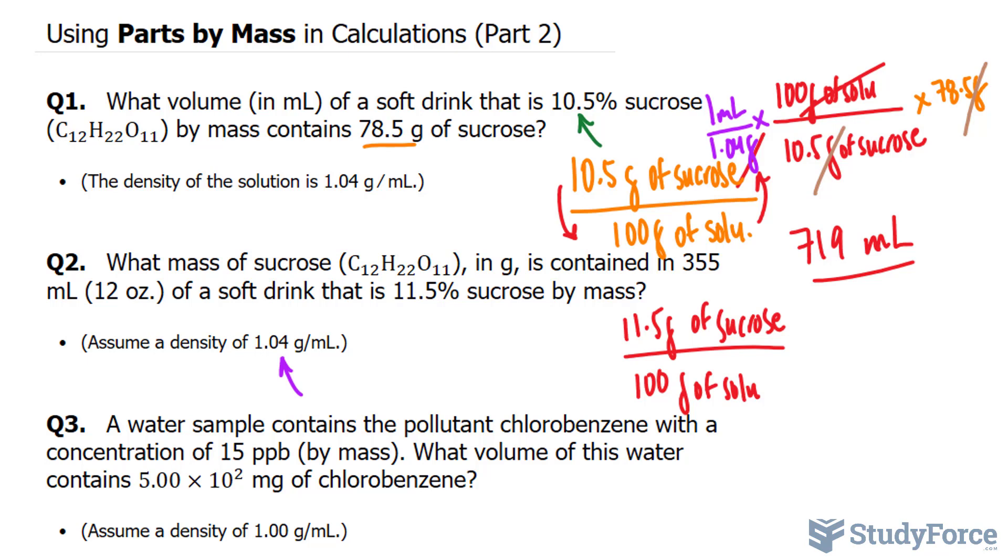Remember what we're looking for here. We're looking for the mass of sucrose at the very end. So I will write this out as 1.04 grams over 1 milliliter. And by doing this, this gram unit and this gram of solution unit cancels out. Remember I'm multiplying these. And this leaves us with grams per milliliter.